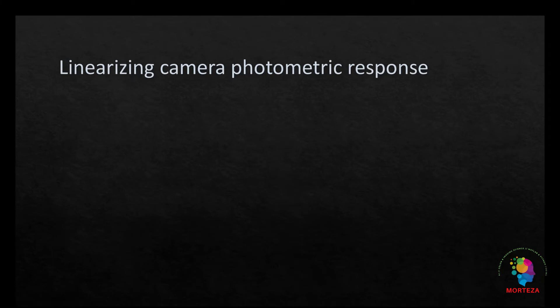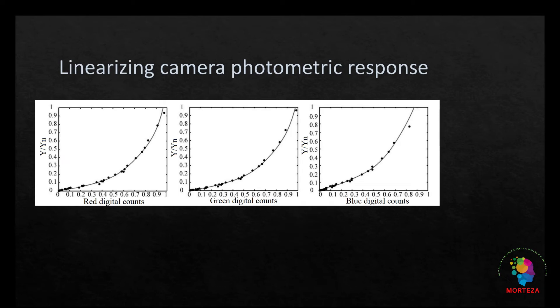Now, the next thing is to linearize the camera photometric response so that they would be linearly related to Y tristimulus value. To do that, the transfer function is derived based on fitting a relationship between the luminance factor and normalized digital counts of the neutral patches. Luminance factor refers to Y over Y-n. Y stands for tristimulus value of the neutral samples, and Y-n is that of the perfect reflecting diffuser. In other words, Y-n is one, perfect reflecting diffuser.